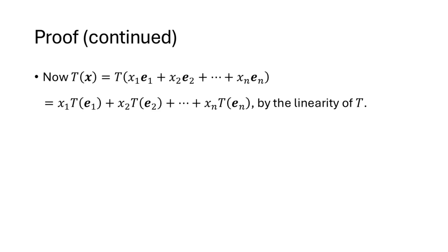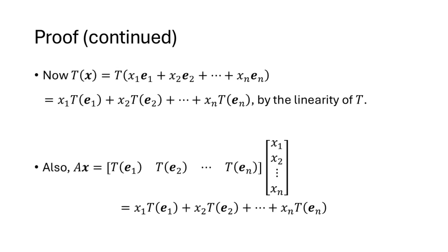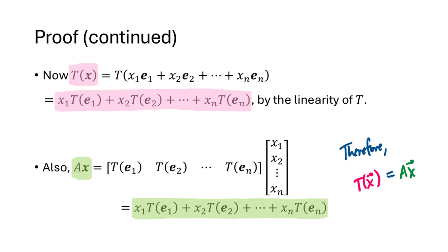Now what happens when we multiply A by x? We'd like to show that t(x) and Ax are the same thing. When we multiply a matrix times a vector, it equals a linear combination of the columns of the matrix, with weights given by the entries of the vector. So Ax = x1*t(e1) + x2*t(e2) + ... — the same expression as t(x). This proves that t(x) equals Ax for any x, so t is indeed a matrix transformation.